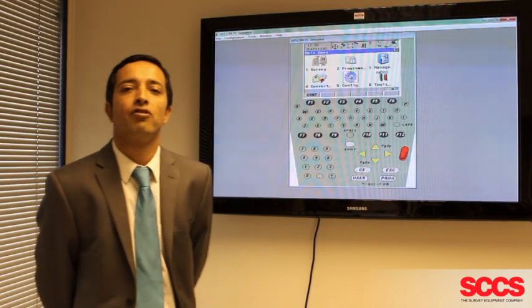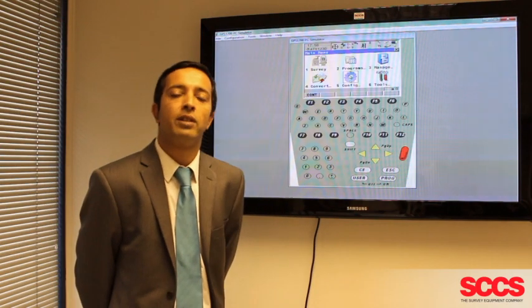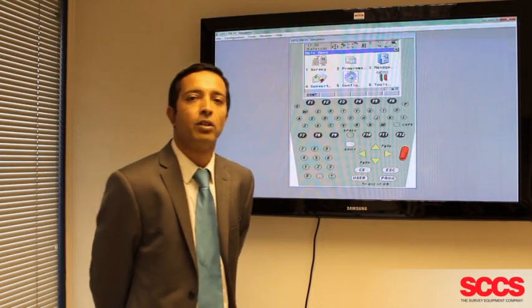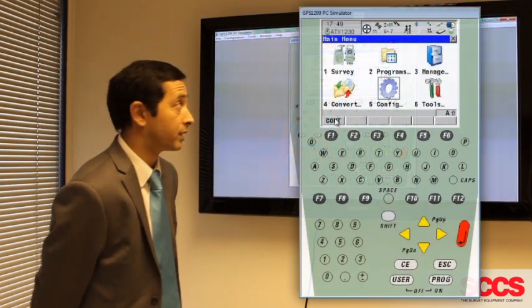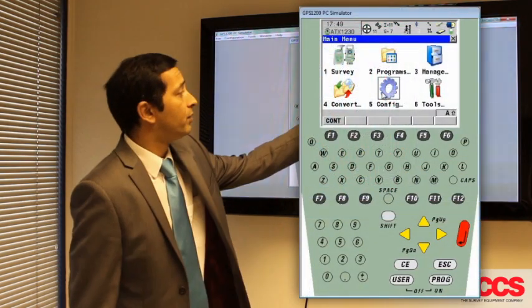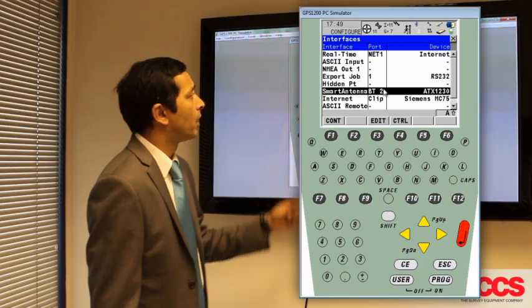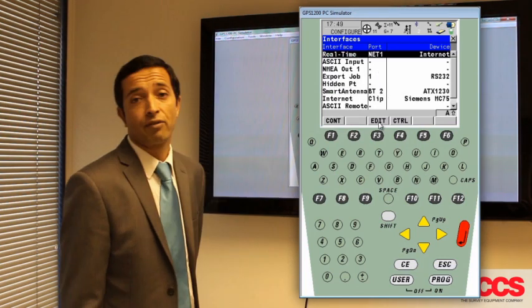Inability to connect to the NTRIP server. If you have an internet connection but are still not receiving corrections, then we need to look at some of your server and NTRIP settings. We find them in configure, interfaces, highlighting real-time and pressing F3 edit.